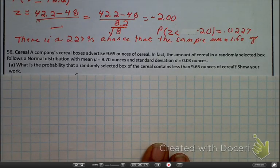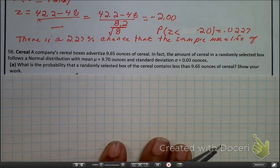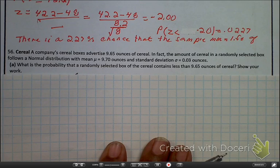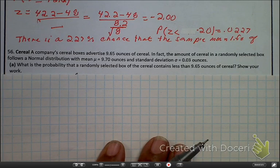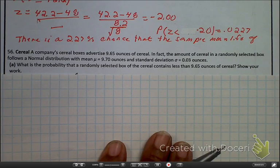Hey, hey, hey, hey! The objective of this video is for us to continue with section 7.3 in which we are given a sampling distribution about the mean. So, go ahead and read number 56.